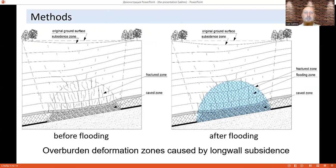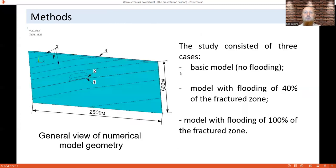Mine water level rise and goaf flooding were modeled in two stages. At the first stage, the height of the flood level was 40% of the height of the fractured zone, and the second stage 100%. Schemes of deformation zones caused by longwall subsidence and subsequent flooding are shown in the slide. We used the method of numerical simulation and method of engineering and graphic analysis. Software system ANSYS was used.